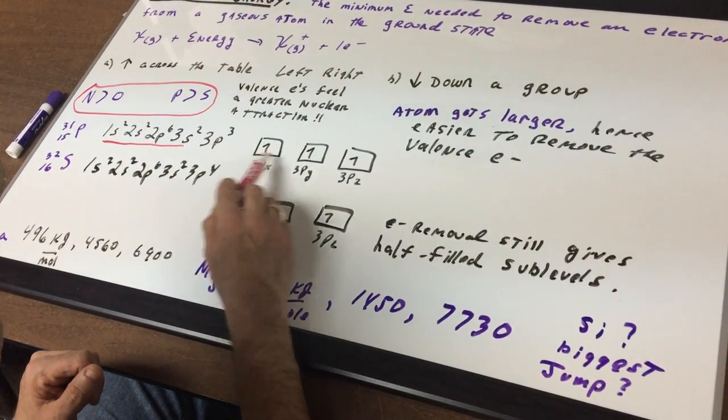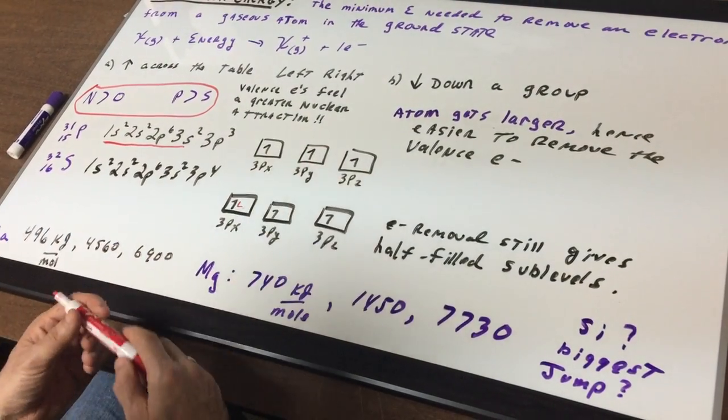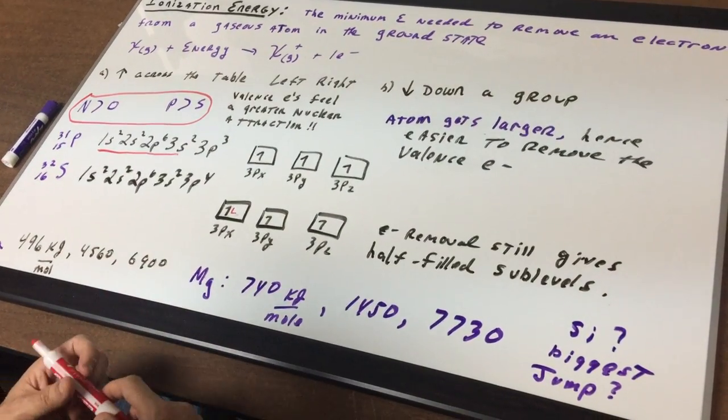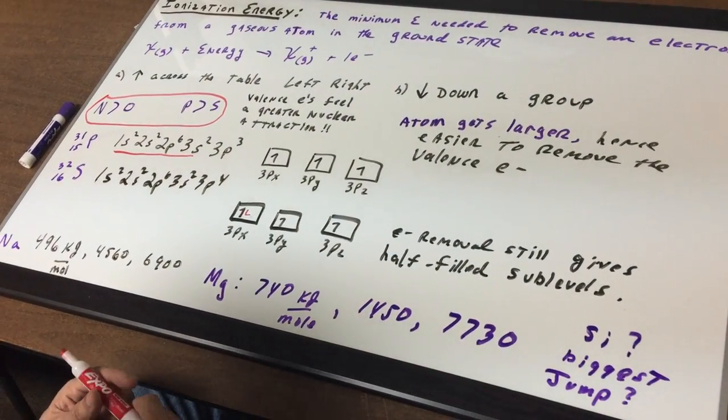So phosphorus, if you removed an electron, you're removing it from a more stable configuration. So that would mean that phosphorus would have a greater ionization energy. All right, I hope that gives you some good ideas on that.